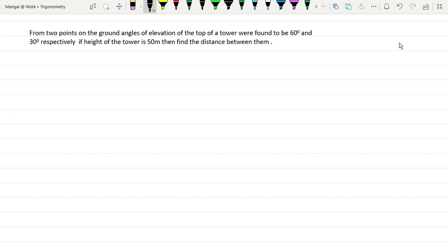From two points on the ground, angles of elevation of the top of a tower were found to be 60 degrees and 30 degrees respectively. If height of the tower is 50 meters, then find the distance between them.